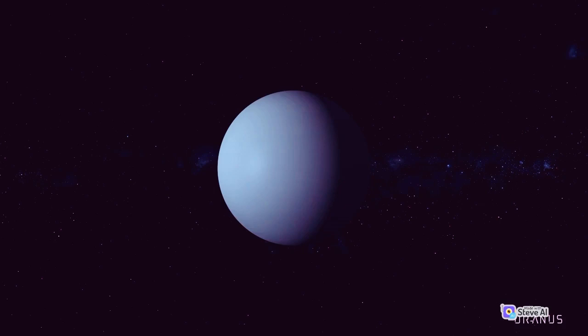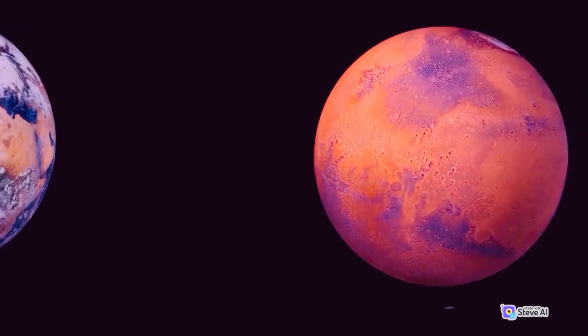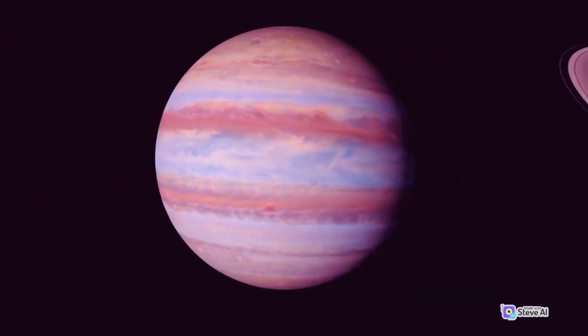Size and distance: Saturn has a diameter of about 120,536 km at its equator, making it the second largest planet in our solar system. It is about 9.5 times the diameter of Earth.